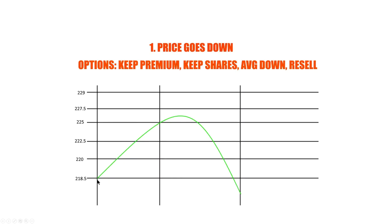Now we have four days until expiration. Let's go over the three possible outcomes. Scenario one: the share price does not hit $225. Say it's the second day and the price is at $218.50 — it bumps above $225 on the third day, but on the actual expiration date it closes back down at $218.50. If the price doesn't close above the strike price, your options expire worthless for the buyer. You get to keep your $10 premium, you keep your 100 shares, and you may even average down on your position since the price is now below your cost basis.